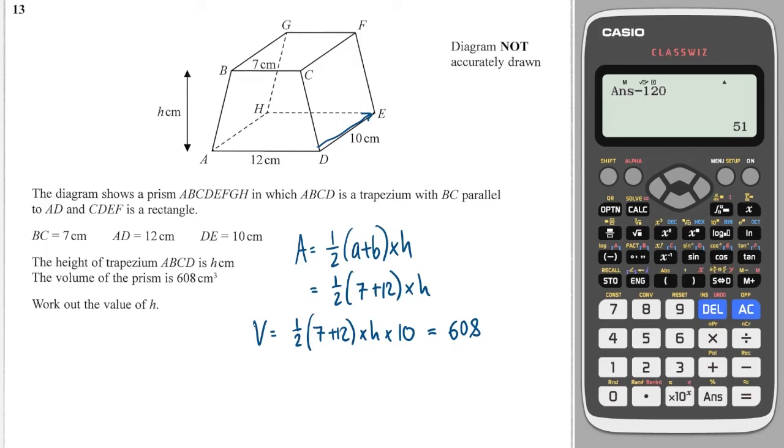We could do some simplifying here. On the left-hand side, we have a half times by 7 plus 12, which is then times by 10, and then times by H. So that's 95 times by H. So we have 95H is equal to 608. So dividing through by 95 gives me 6.4.